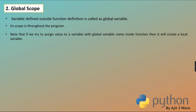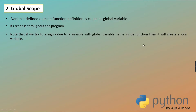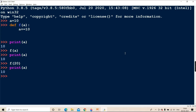Note: if we try to assign a value to a variable with the same name as a global variable inside a function, will it change the global variable or create a local variable of its own? The answer is: it creates its own local variable. Inside the function, it will create a local variable - this is the scope rule of Python.